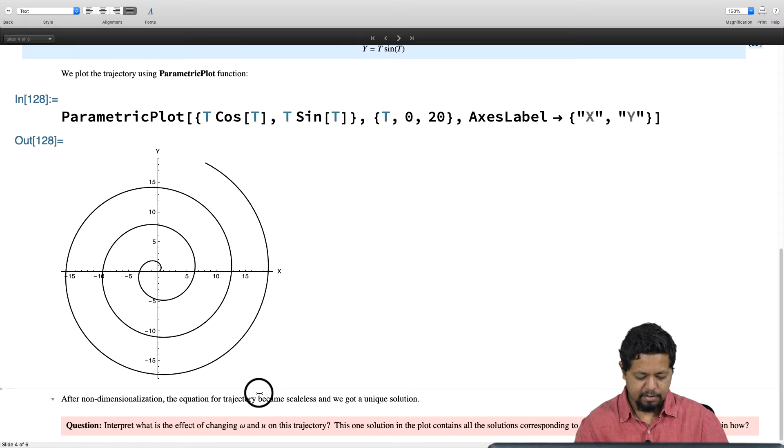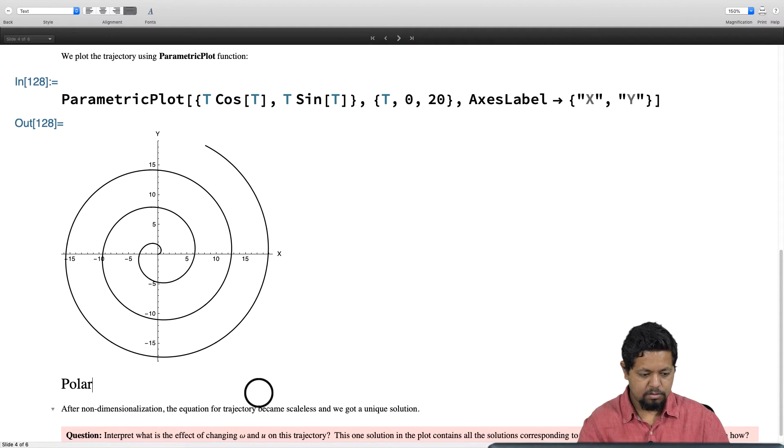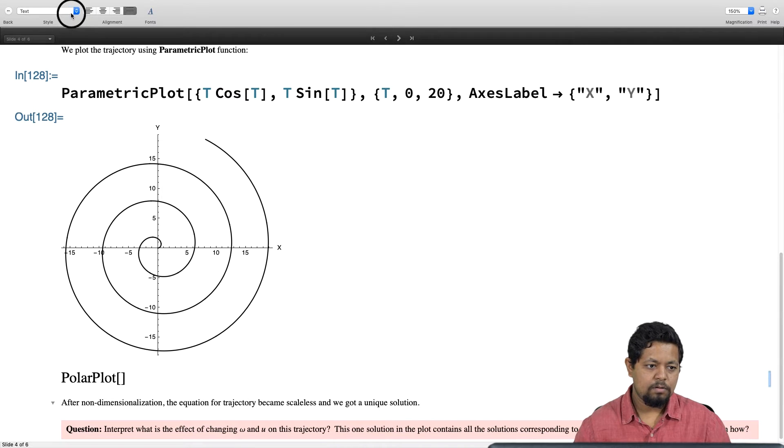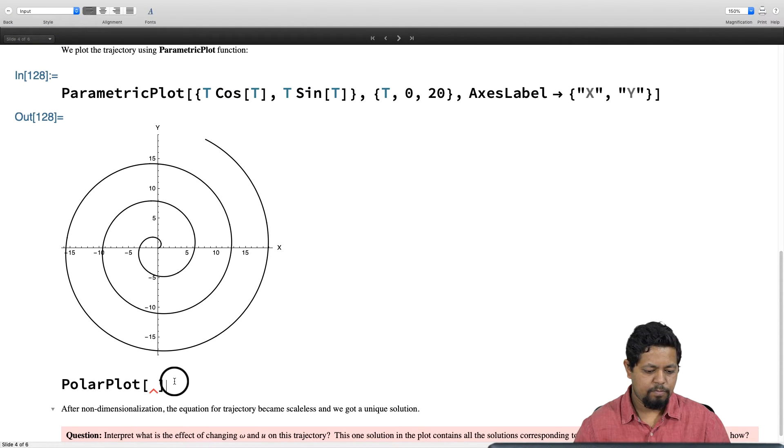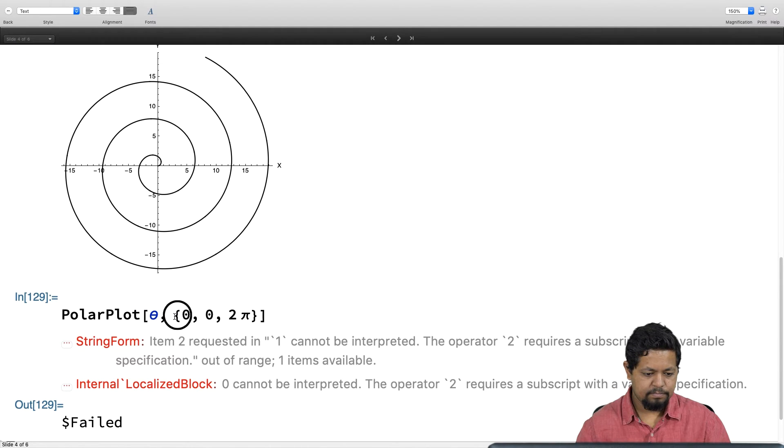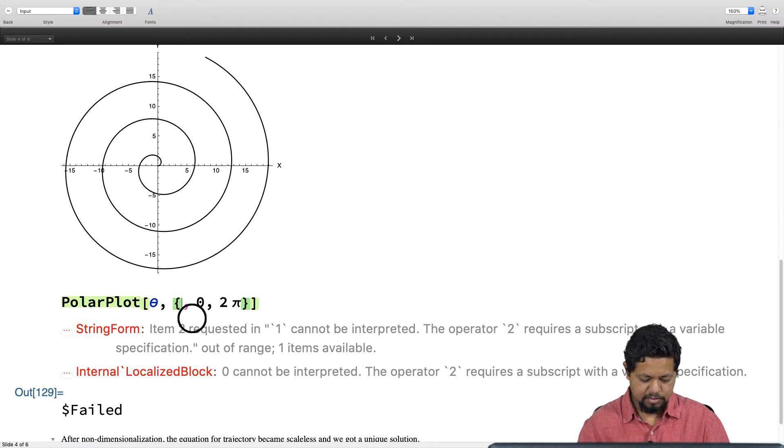I can also make this by a polar plot. For polar plot, I give the equation of r in terms of theta—in which case this is just theta—and I say theta goes from 0 to 2 pi. This should be theta.